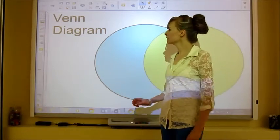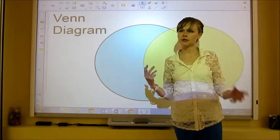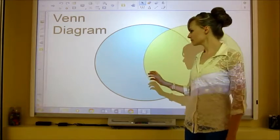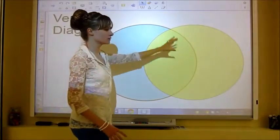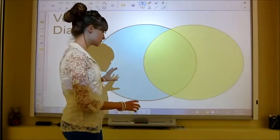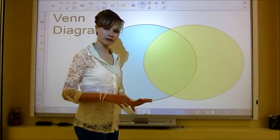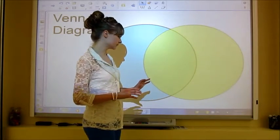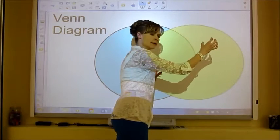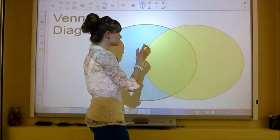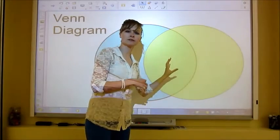One type of diagram is a Venn diagram, and there are actually two styles. This is the more common one you've probably seen — we've got two circles, and it's just a way of sorting information. If information fits both the yellow circle and the blue circle categories, then it goes in the middle where they overlap.